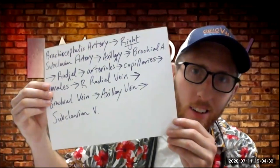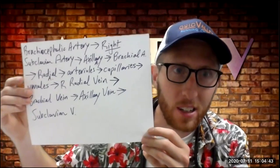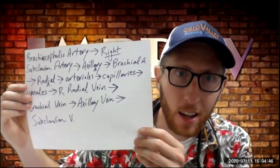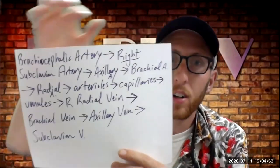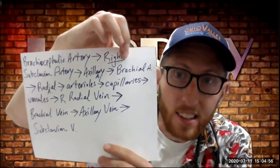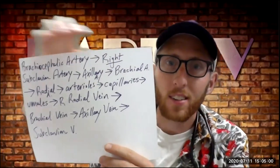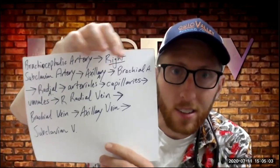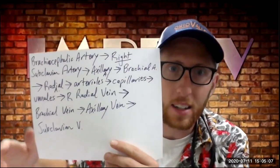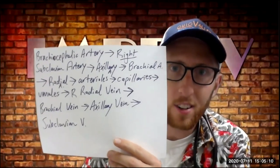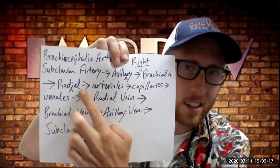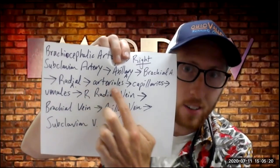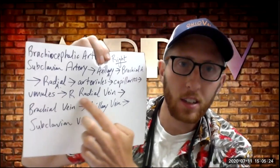Here is the correct answer for the blood mapping exercise. On an exam you'll have to write it out like this, listing every single location. Remember to specify the right side of the body. Starting at the brachiocephalic trunk — which is an artery — then the right subclavian artery, right axillary artery, then the brachial artery. It splits and goes to the radial as well as the ulnar arteries. To get from the radial artery to the radial vein, you must pass through arterioles, capillaries, and venules.